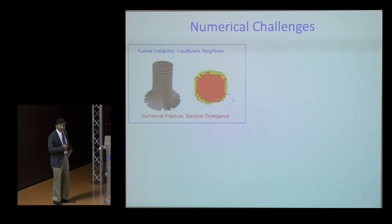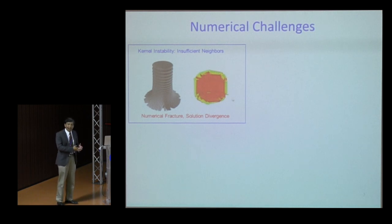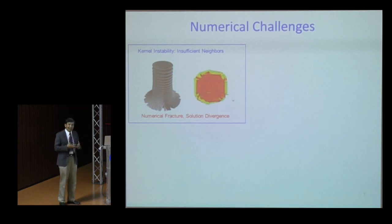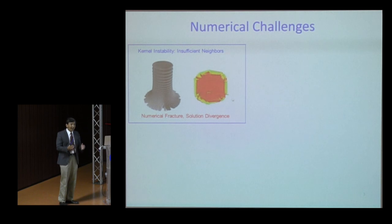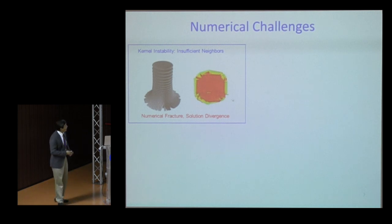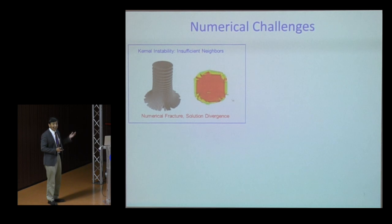The first challenge is kernel instability in mesh-free methods. The difference from particle methods is that the completeness condition is imposed — meaning first-order completeness must be satisfied everywhere in space, requiring enough kernel neighbor coverage. The higher the order needed, the more neighbors are required, which may not be easy to satisfy.